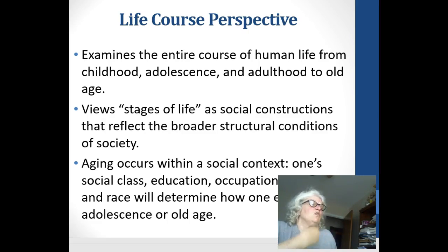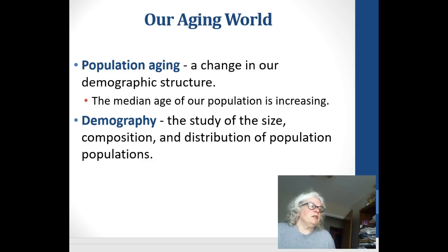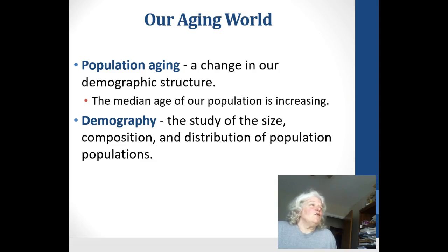Age occurs within the context of one's social class, education, occupation, gender, and race, and they all affect the experiences of old age. Population aging is ever-changing in our demographic structures. In the past we thought if you turned 62 you could retire with early retirement. Today 65 isn't even full retirement — baby boomers are facing 66 and up as their required time for obtaining Social Security.